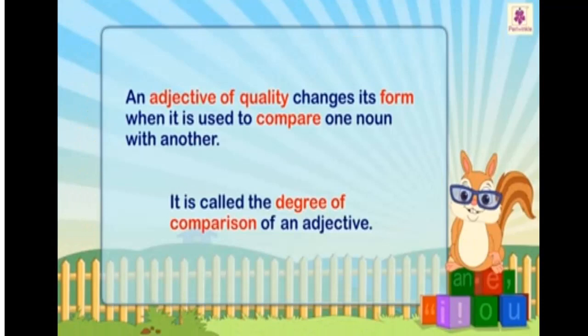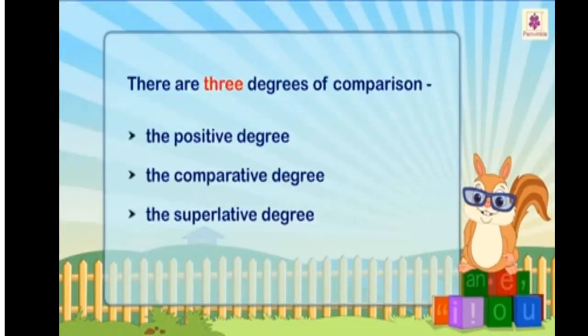An adjective of quality changes its form when it is used to compare one noun with another. It is called the degree of comparison of an adjective. There are three degrees of comparison: the positive degree, the comparative degree, and the superlative degree.